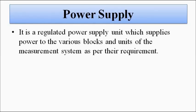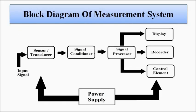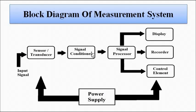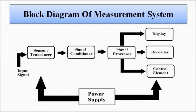This is the block diagram of a general measurement system — the basic layout. All of these blocks are important parts of the measurement system. Without any one of these blocks, the measurement system will fail to work as it is supposed to, and removing any block will greatly decrease the system's efficiency. I hope you liked this video. Please subscribe to the Engineering Tutorial channel for more videos related to electrical, electronics, instrumentation, and communication engineering. Thank you very much.